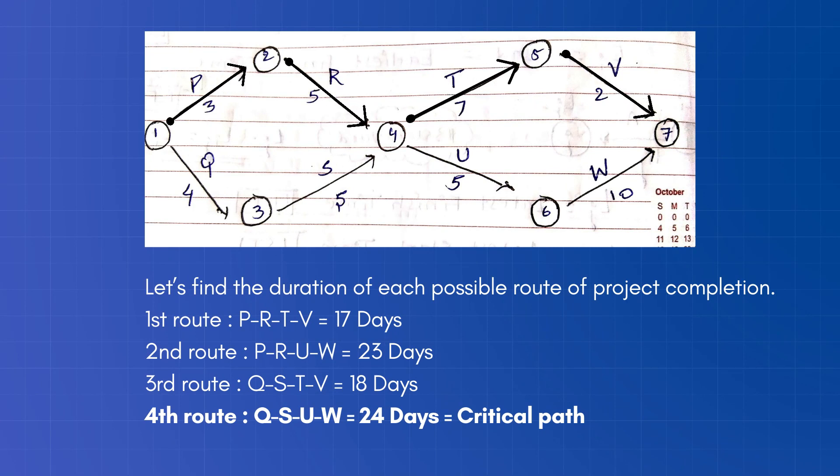First route would be through P, R, T, and V. In this route, 17 days will be consumed for project completion.